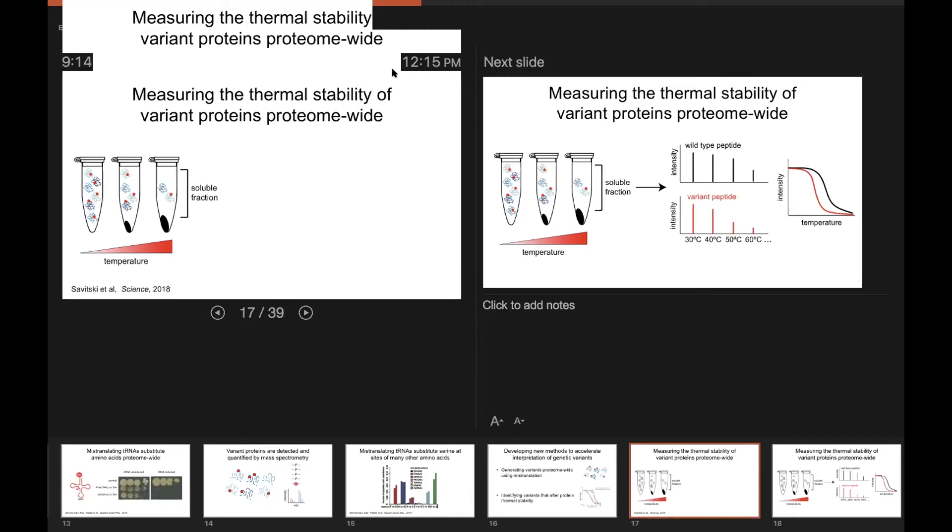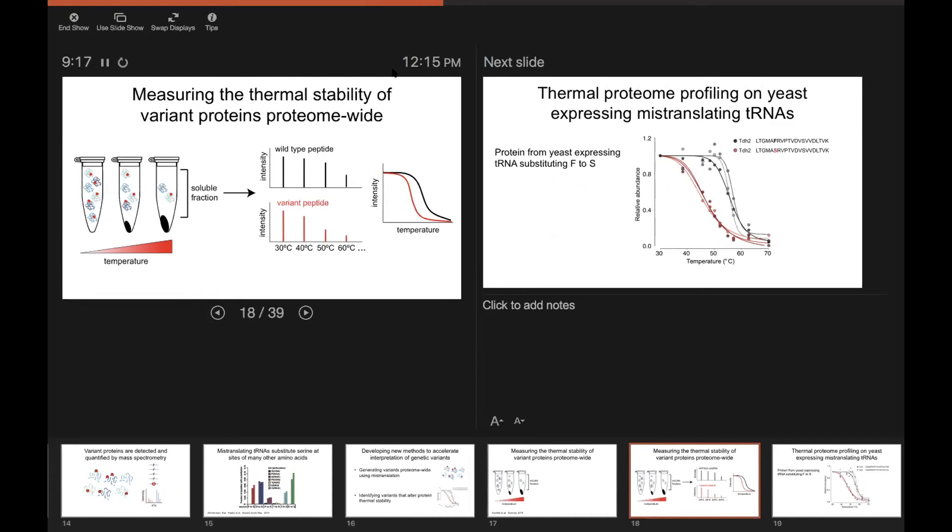And so we reasoned that we could extend this method to look at protein variants by simply instead of looking at each protein just by itself, we could compare the wild-type peptides from that protein to the ones containing, in our case, serine variants.